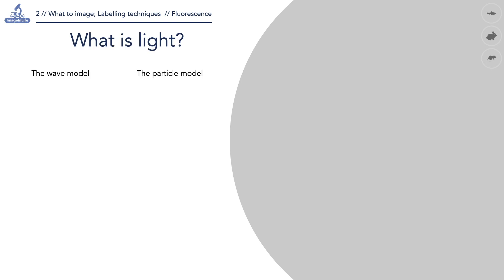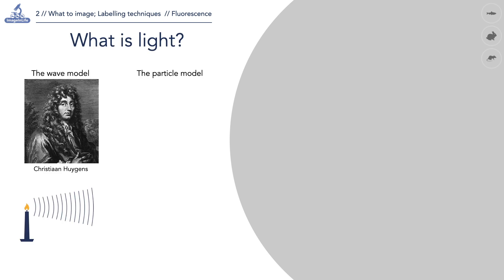The light has both wave and particle qualities. The scientist Christian Huygens established the wave model of light. Light can be described with its wavelength and frequency.